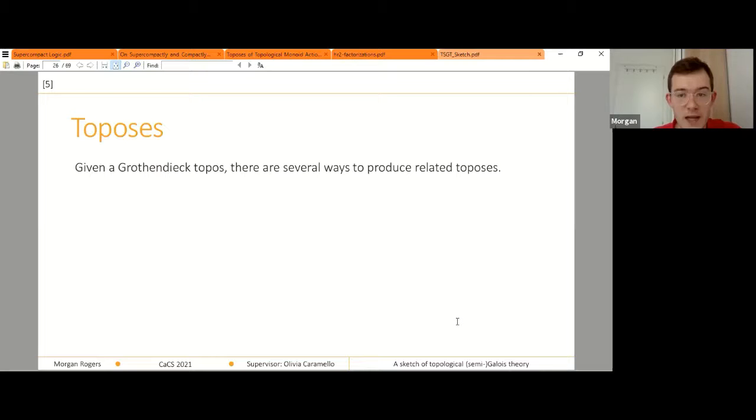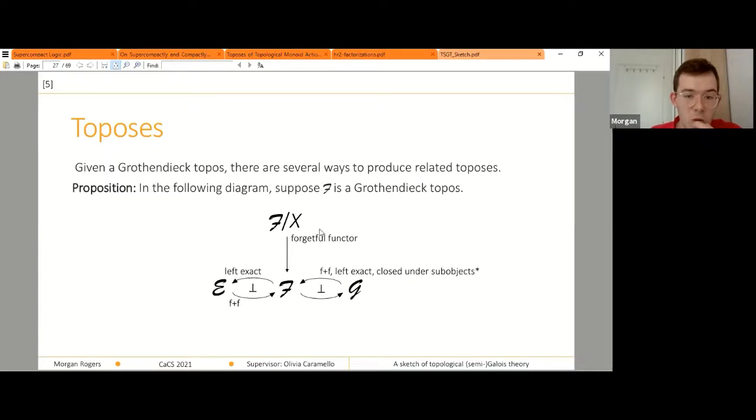So given such a category, there are several ways to produce related ones. So suppose that F is a Grothendieck topos here. I can take a slice category. Here's a forgetful functor. I can take a further reflection, left exact reflection of it. So a left exact reflection of a left exact reflection of a presheaf category is in particular left exact reflection of a presheaf category. So that all works. But on the other side, I can take an adjunction of this form where the left adjoint is full and faithful, still left exact, but also closed under sub-object. Now, if you're familiar with topos, this might sound stronger than conditions that you're familiar with, but I can go over that at the end if need be. Now, there may be a few further stars because the timing is a bit tight on this talk. So anytime you see a star, ask me about it at the end. So under these conditions, all of these three on the outside are Grothendieck toposes.